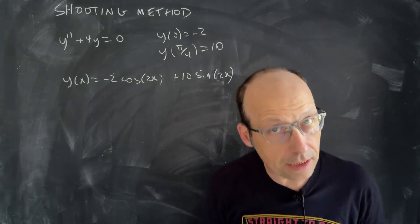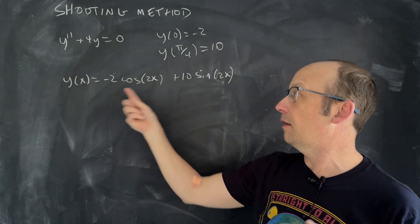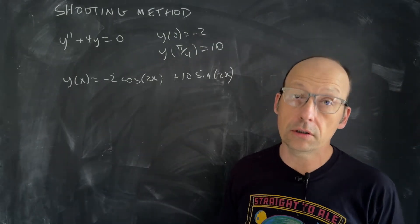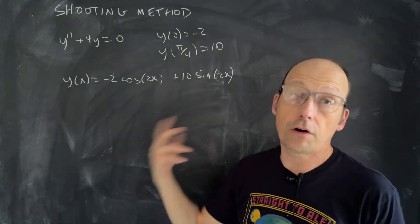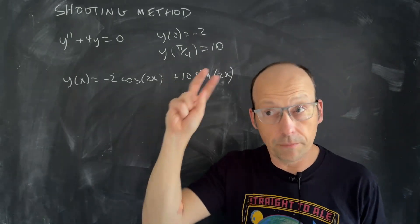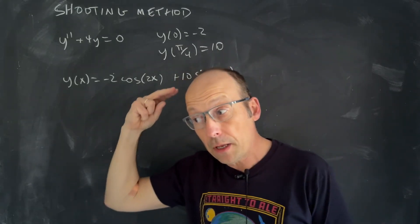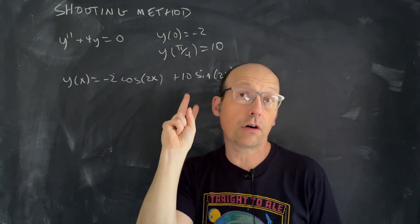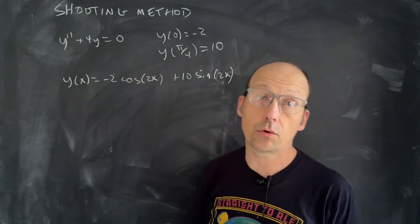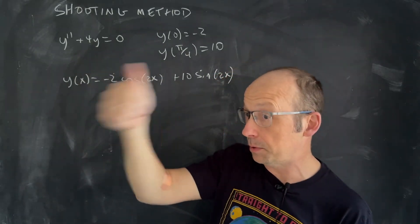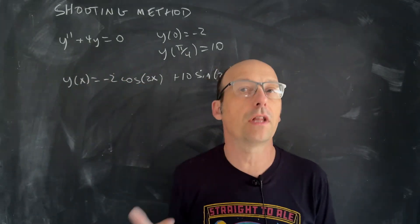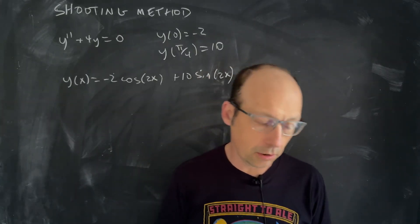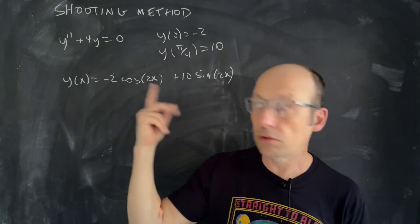If you did this analytically, you'd get a solution after finding the general solution, applying the boundary conditions, and solving for the coefficients. Just to remember: if I had a time-based problem with initial conditions, I'd have two initial conditions — the initial velocity and the initial position — to solve for two constants in a second-order DE. But here I have two boundary conditions at two different spatial locations.